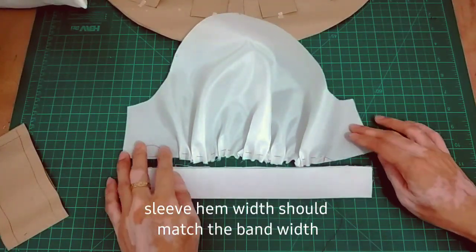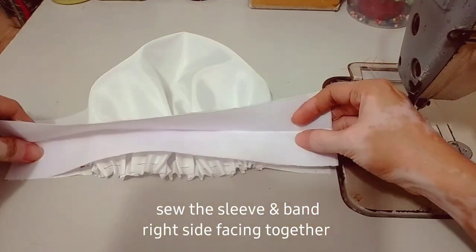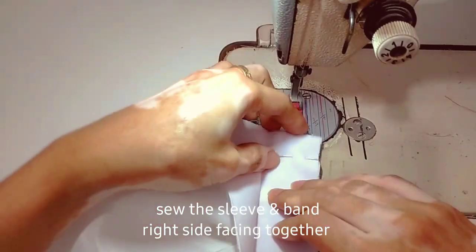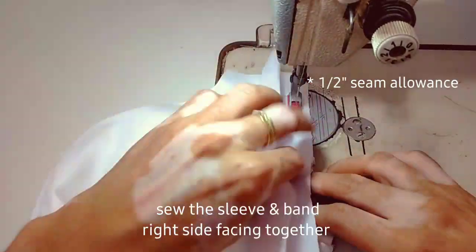The sleeve band should match the hem of the sleeves. We can now piece together the sleeve band and the sleeves, and we have 1.5 seam allowance.